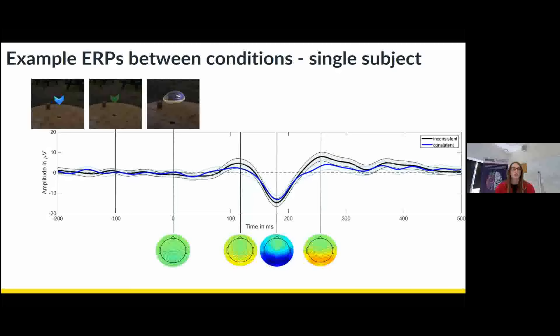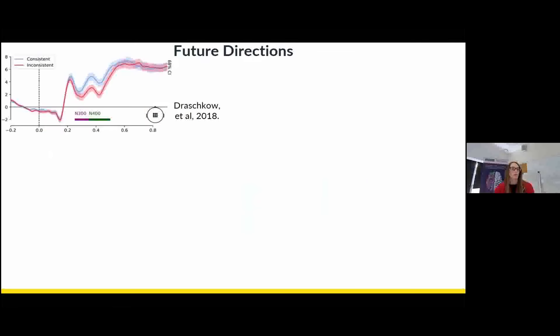So the next steps are, of course, to collect the rest of our participants, the rest of our data, and then do some data analysis, where we're planning on starting off with the ERPs analysis. As previously, it's been shown that you find large amplitudes of the N300 and N400 to inconsistent objects compared to consistent objects. So we want to see whether we're going to get the same sort of results.